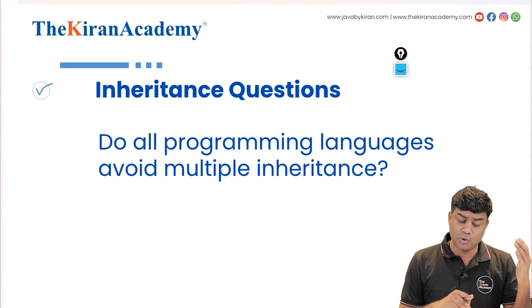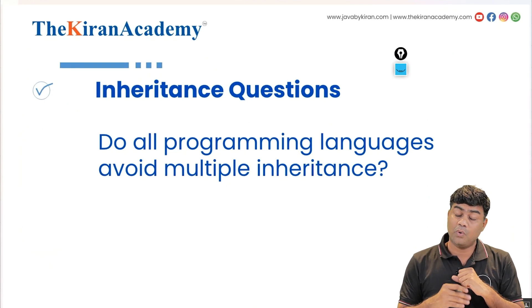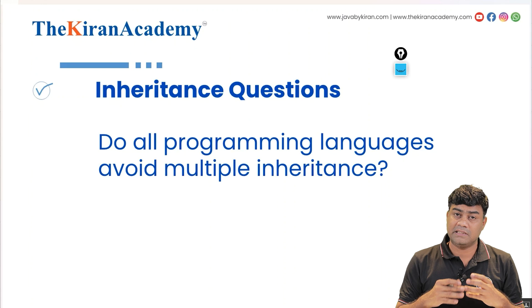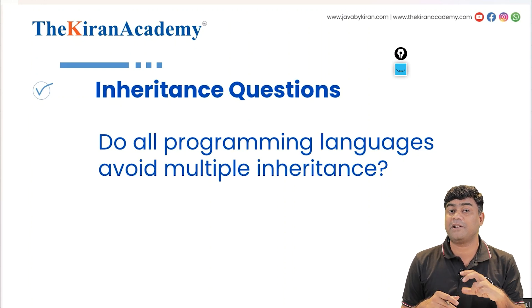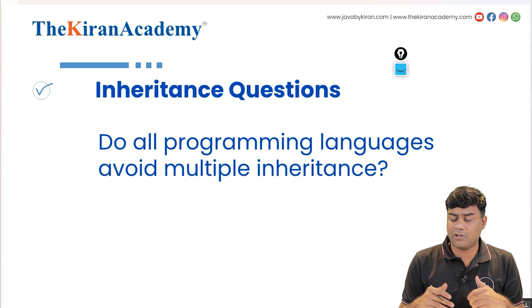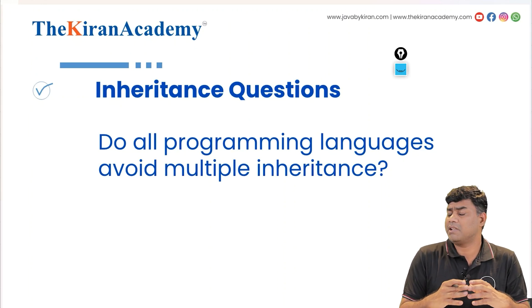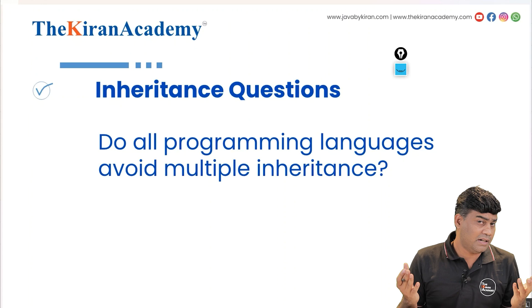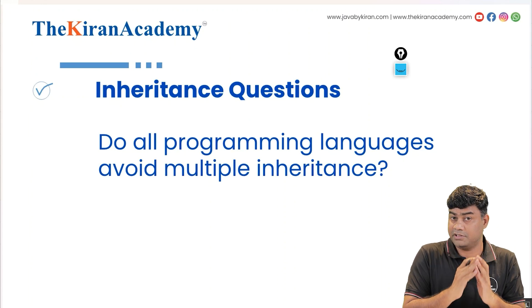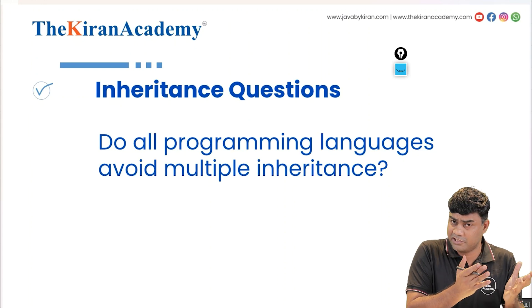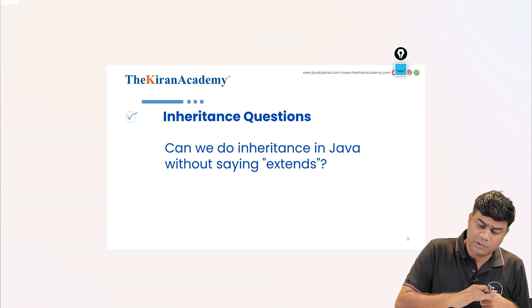Next question: do all programming languages avoid multiple inheritance? The answer is no. Only Java avoids it. C++ allows multiple inheritance. Python does not allow it by default, but there are some ways to use it in C++. So it is mainly Java that restricts multiple inheritance.